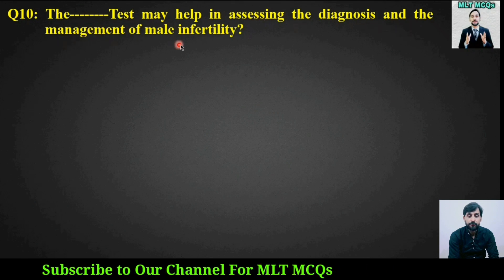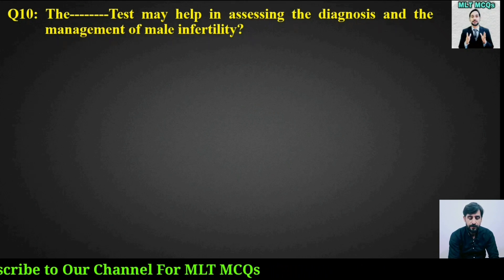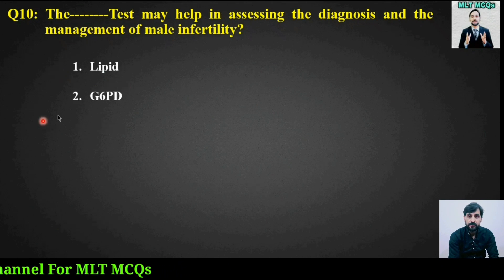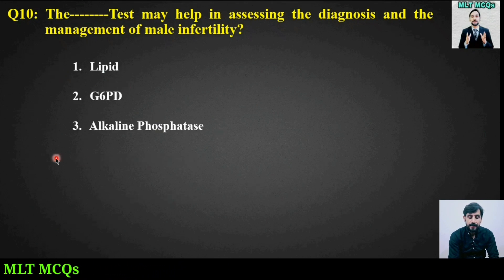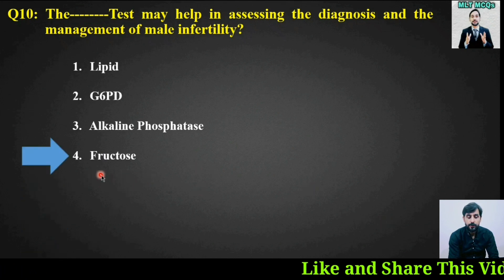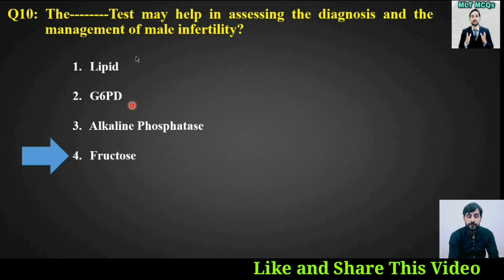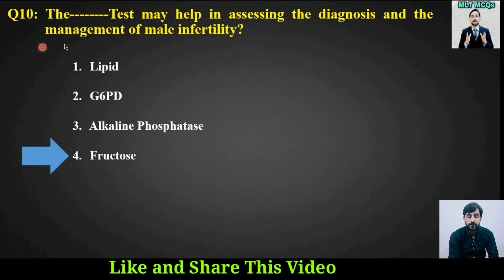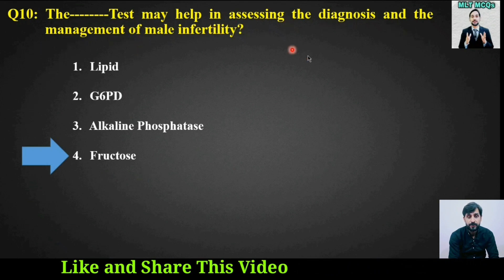MCQ number ten: Which test may help in assessing the diagnosis and management of male infertility? Options are: lipid test, G6PD test, alkaline phosphatase, or fructose. The right answer is option number four — the fructose test may help in assessing the diagnosis and management of male infertility.